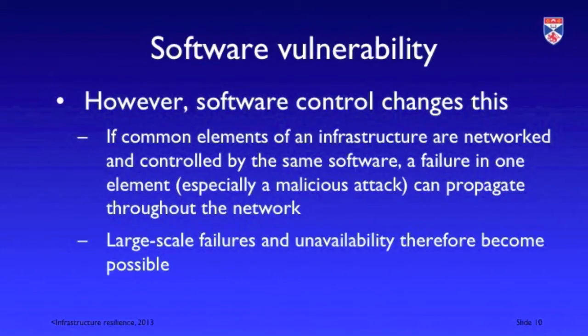However, as we move to software control, this changes. Software systems controlling our infrastructure communicate with each other, so failure of one part can be communicated almost instantaneously across the whole infrastructure, causing disruptive events throughout. Attacks or incidents that affect software control can therefore be much more disruptive than physical events that simply affect a small part of the infrastructure.